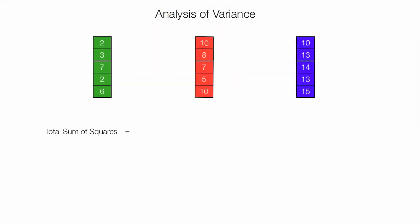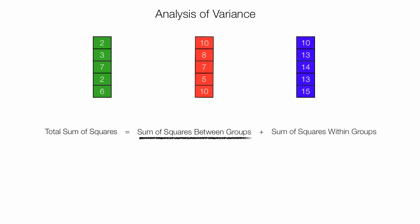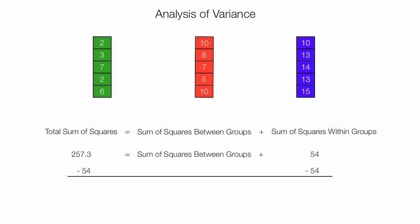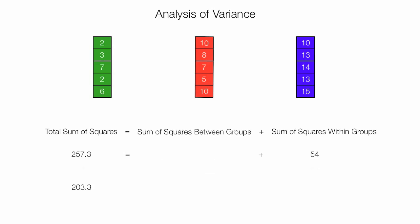I've now calculated Total Sum of Squares, and this is equal to Sum of Squares between groups plus Sum of Squares within groups. I can solve algebraically for Sum of Squares between groups: 257.3 equals Sum of Squares between groups plus 54. Subtracting 54 from both sides, Sum of Squares between groups equals 203.3. I just want to show you what I'm going to do before I do it in Excel — and now I'm going to calculate Sum of Squares between groups.